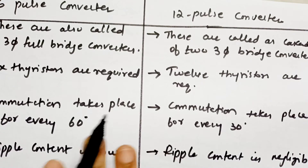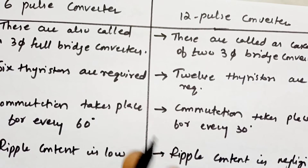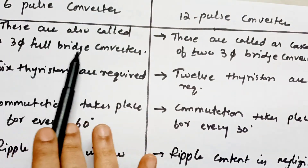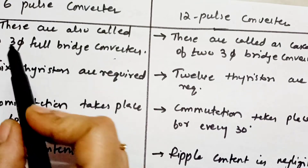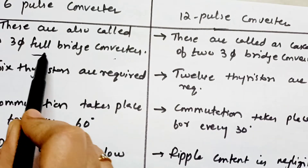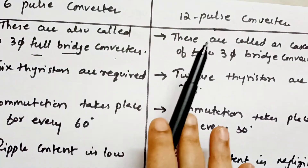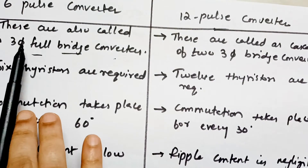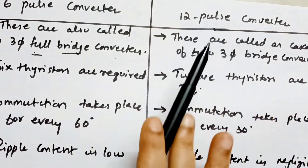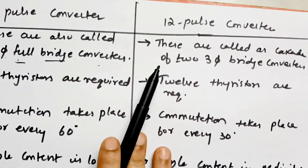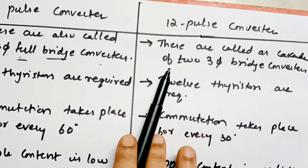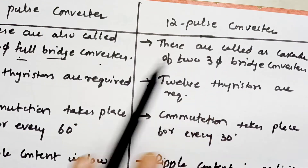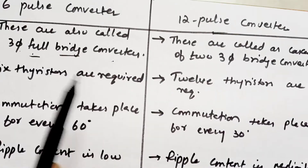These are also called 3-phase full bridge converters — remember that term. A 12-pulse converter is simply a cascade of two 3-phase full bridge converters. That's it.